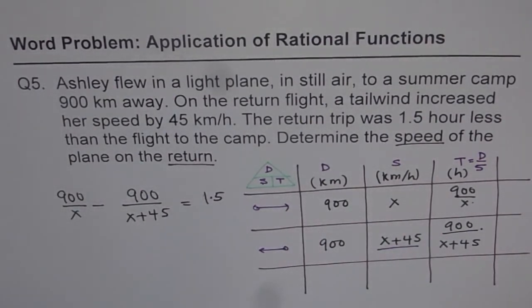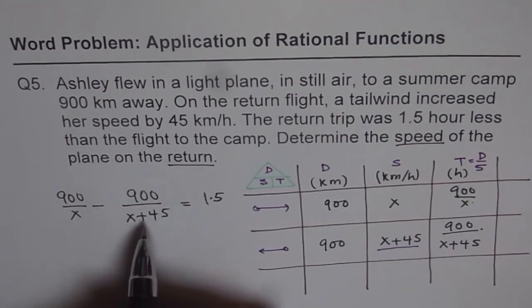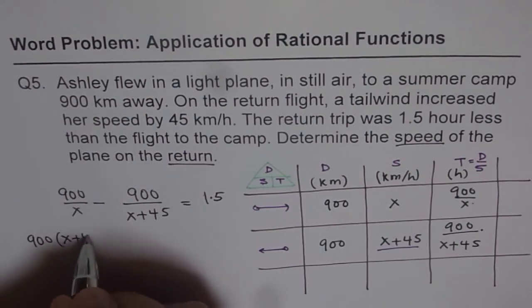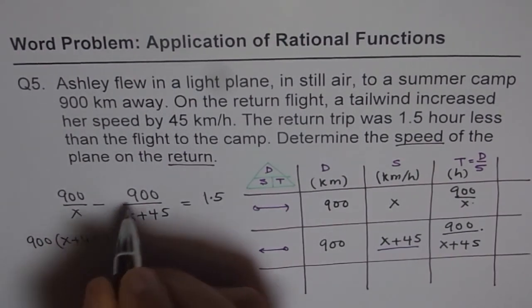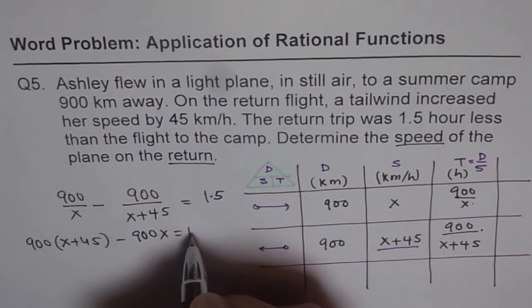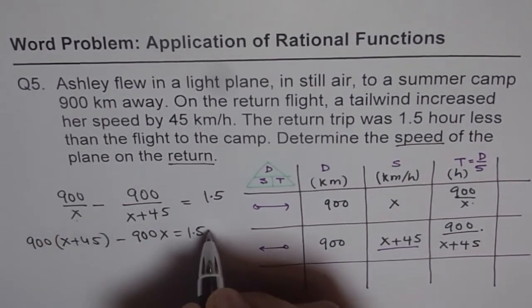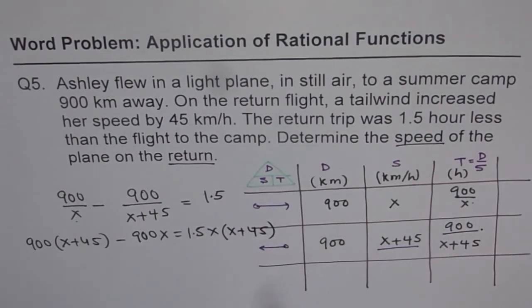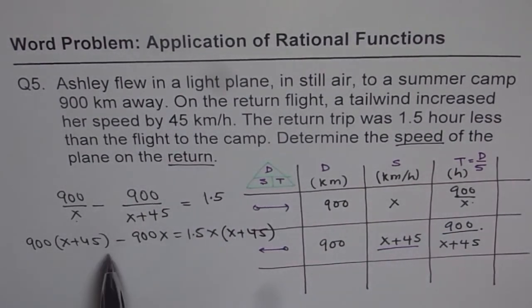And now it is an easy job for you. Take common denominator of x times x plus 45, multiply every term with that. So when you multiply that, you will get here 900 times x plus 45 minus 900x equals 1.5x times x plus 45. Now bring all the terms together, you will get a quadratic equation, solve for x.